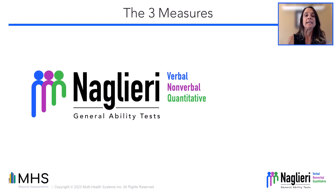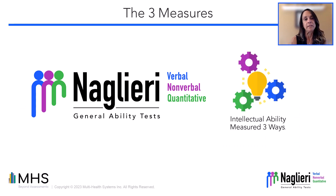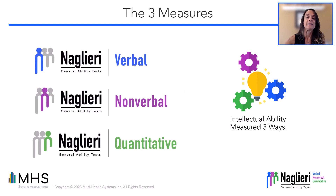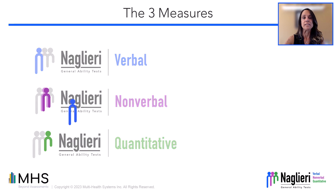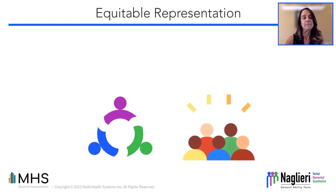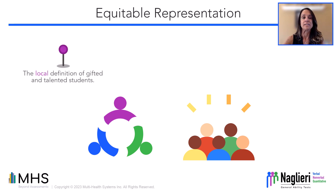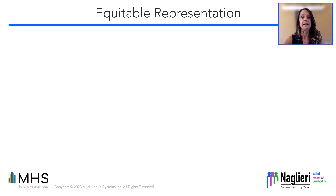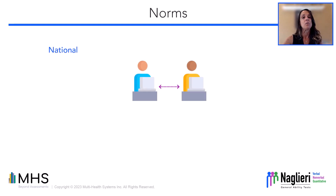The Nagliari General Ability Test measures general intellectual ability using test questions that have verbal, nonverbal, and quantitative content. Each of these three measures were designed with equity and fair representation in mind for use across diverse populations. Equitable representation is influenced by the local definition of gifted and talented students, the content of the tests used in the identification process, and how tests are used, including different reference groups. For this reason, the Nagliari General Ability Test allows comparing students of the same grade by either using national or local norms.